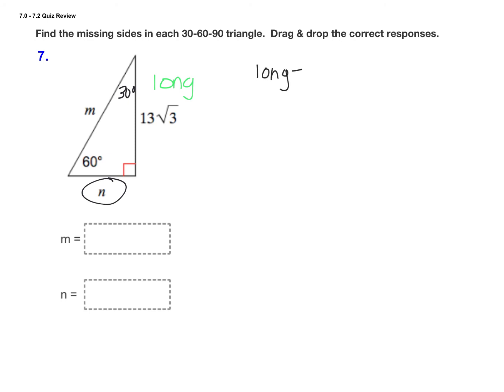The long leg in a 30-60-90 triangle is the short leg times the square root of 3. So 13 root 3 equals n root 3. To get n by itself, divide each side by root 3. Root 3 over root 3 cancels out, so n equals 13.